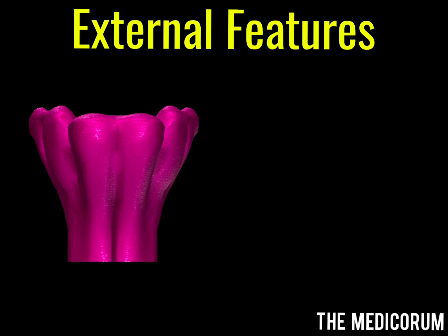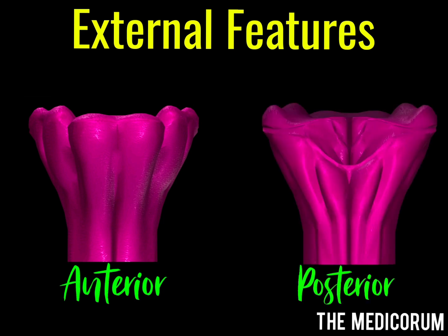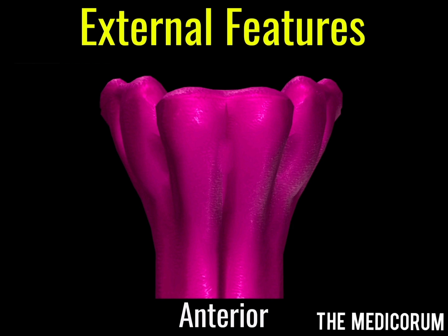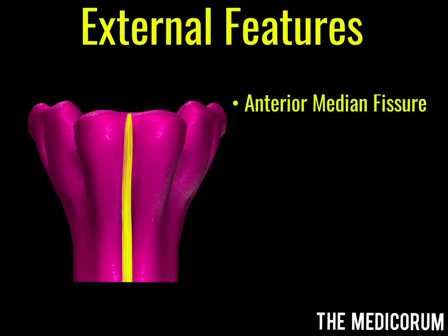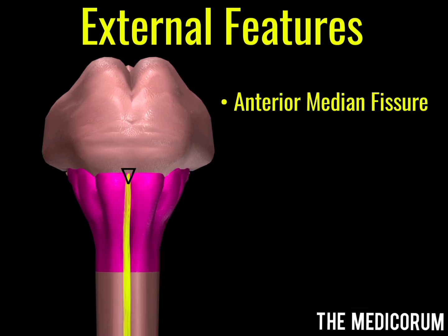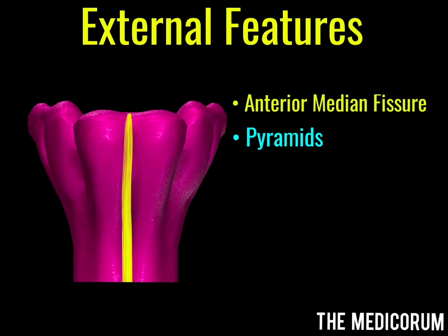Moving on to the external features — the external features of medulla oblongata will be studied under two parts: the anterior or ventral part and the posterior or dorsal part. The anterior features of medulla include, firstly, the anterior median fissure. The anterior median fissure, along with the posterior median sulcus on the posterior side of the medulla, helps in dividing the medulla into two parts. On either side of the anterior median fissure we have two elongated elevations known as pyramids.